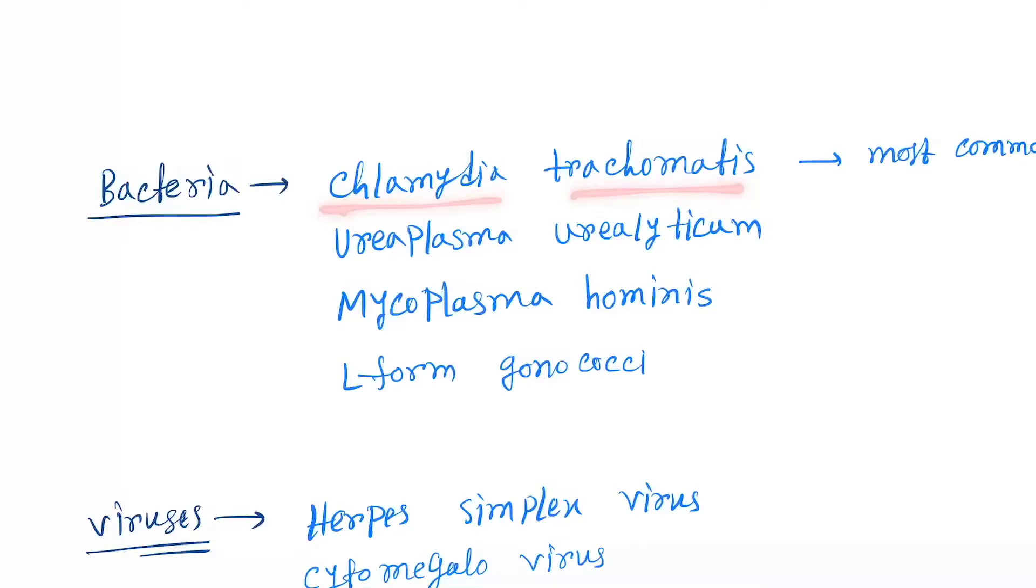First is bacteria. Chlamydia trachomatis is most common, followed by Ureaplasma urealyticum, Mycoplasma hominis, and L-form gonococcal. These are also gonococcal but different - L-form - so normal routine test investigations will not be able to diagnose.